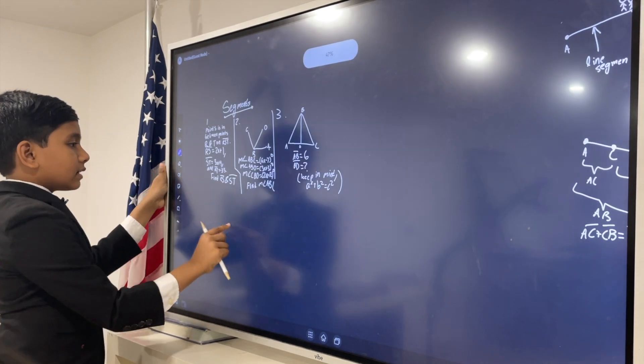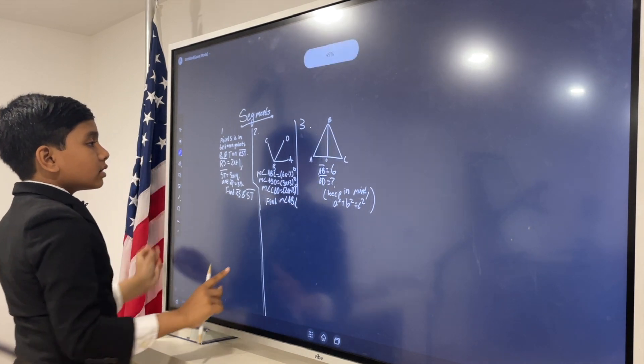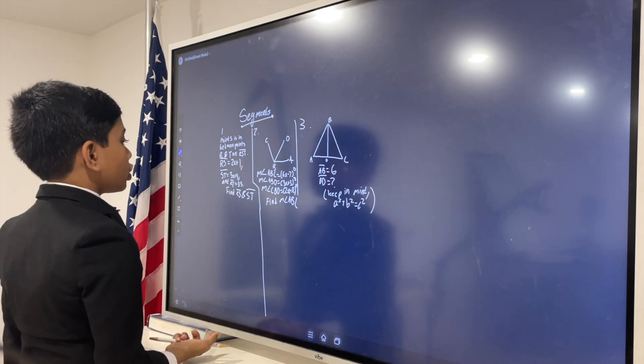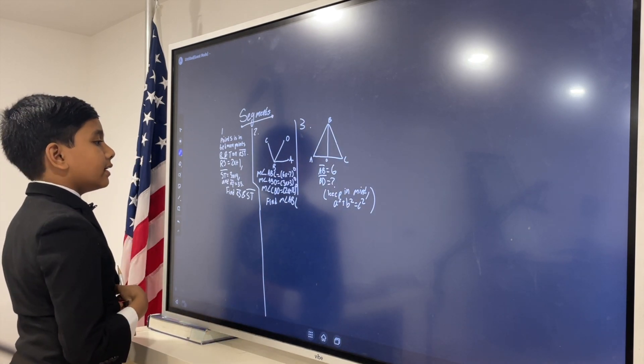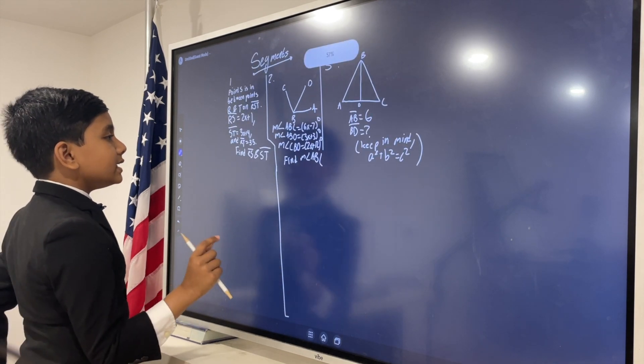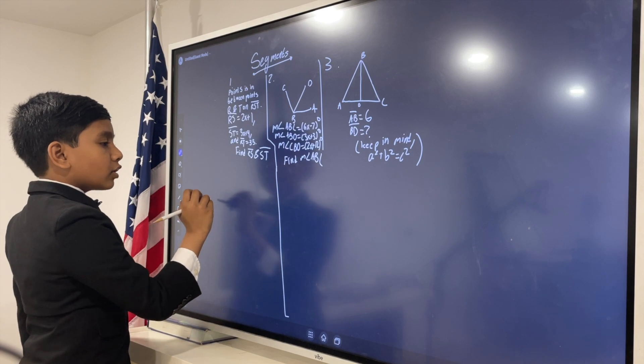Alright. So, number one. Point S is in between points R and T on line RST. RS is 2x plus 1, ST is 3x plus 4, and RT is 35. Find RS and ST.